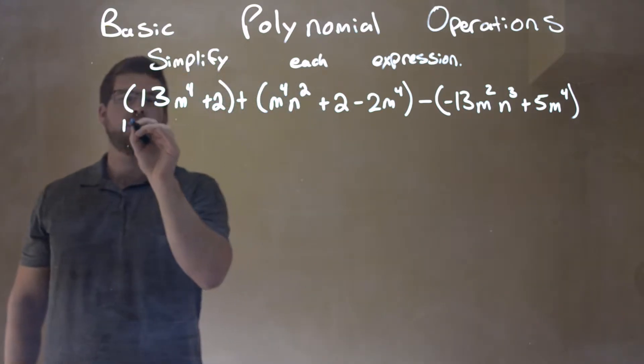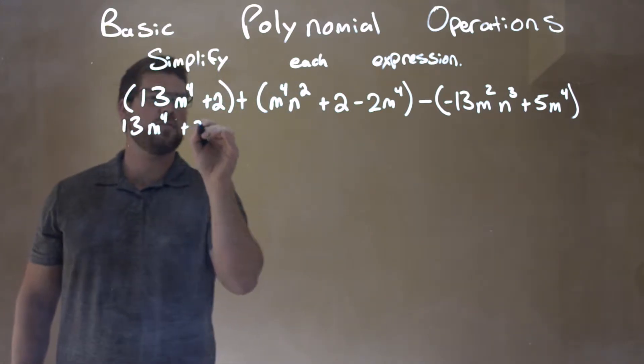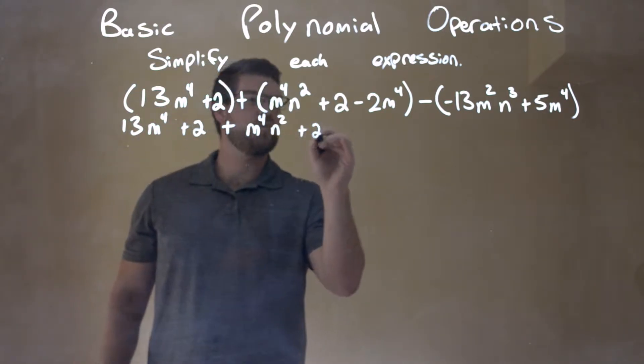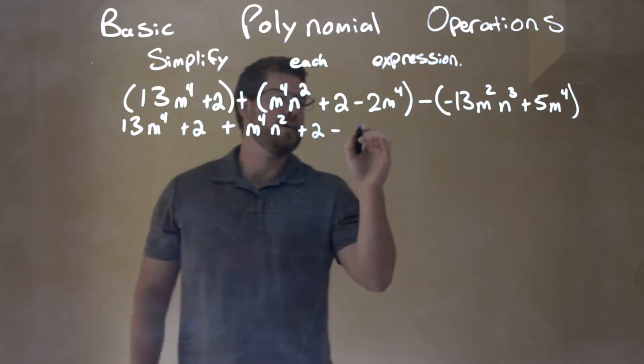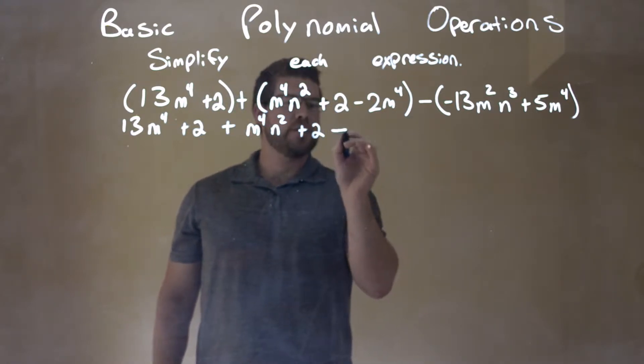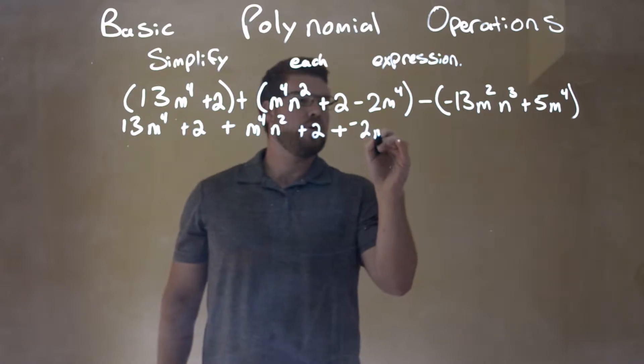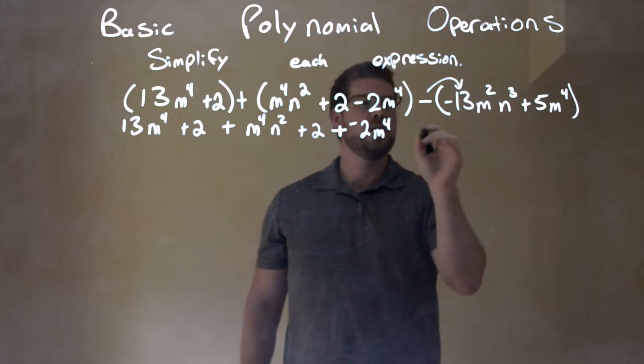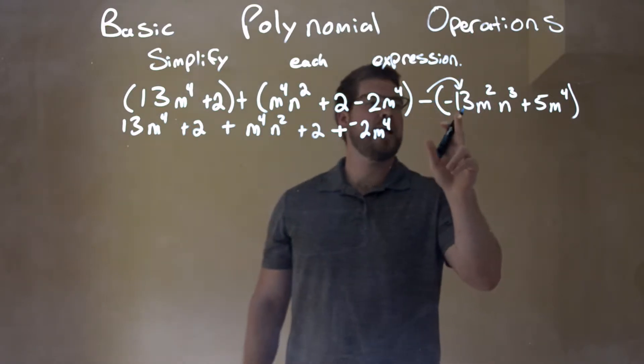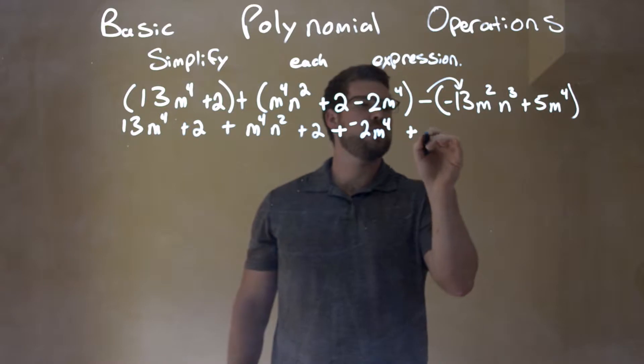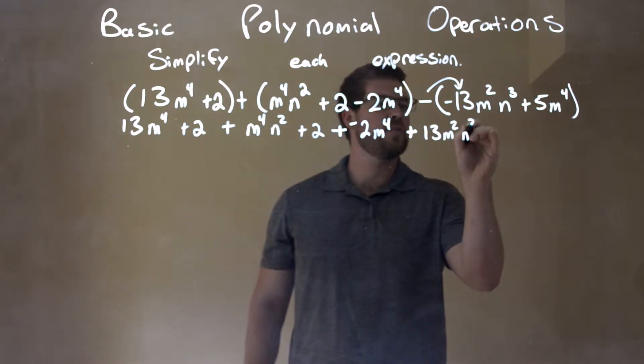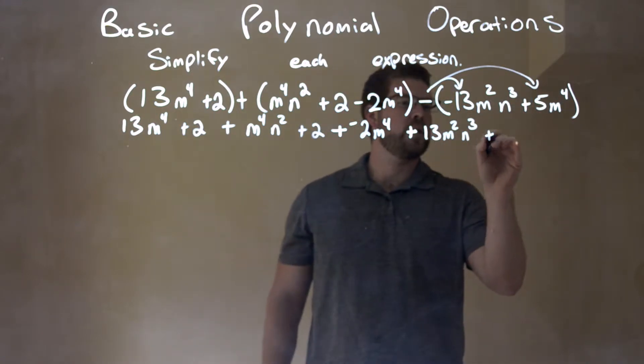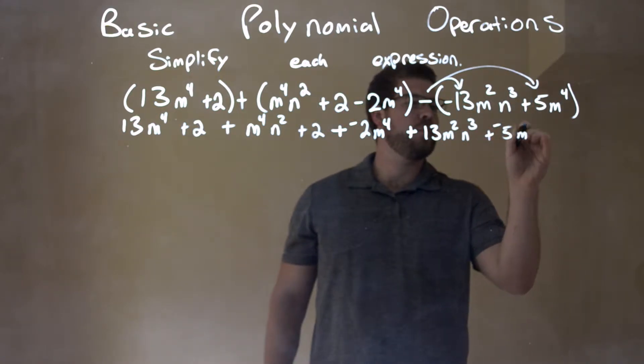Let's do that. We have 13m to the fourth plus 2, plus m to the fourth n squared plus 2 minus. Let's make this a plus and negative. Plus negative 2m to the fourth. Now we're going to distribute the subtraction sign to both parts here. Negative and a negative make a positive, so we have a positive 13m squared n to the third, and we distribute the next negative sign over and we have plus a negative 5m to the fourth.